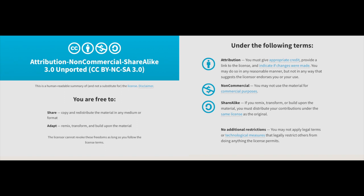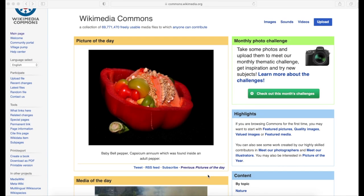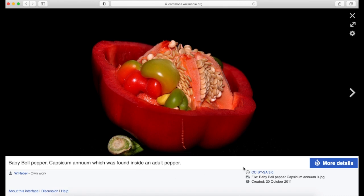Attribution non-commercial share alike licenses are also commonly used for museum images taken by individuals. If you see this license, you will need to cite the photographer's or the owner's name and only share it for non-commercial purposes under the same license. For example, this image of the day on Wikimedia Commons is under an attribution non-commercial share alike license.